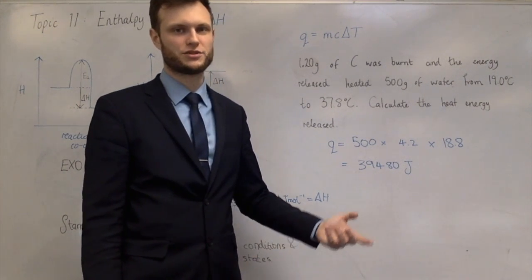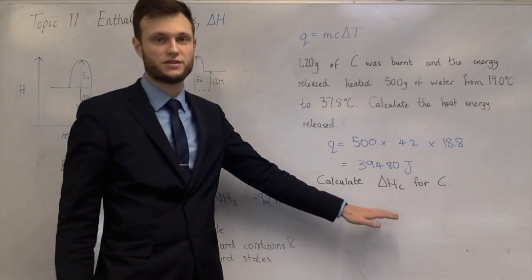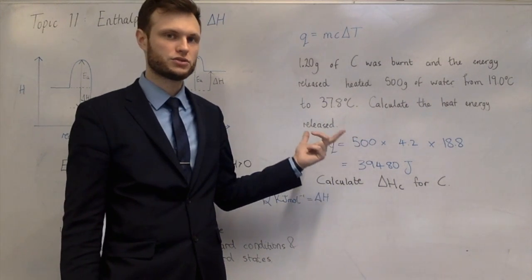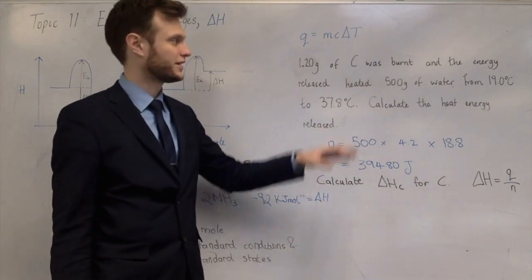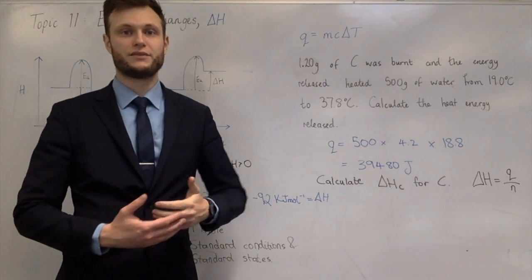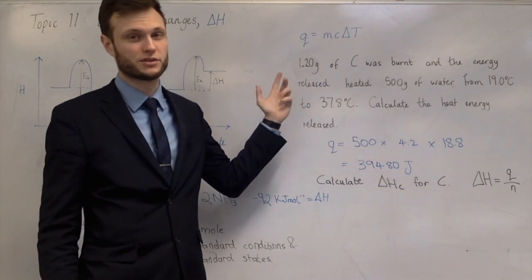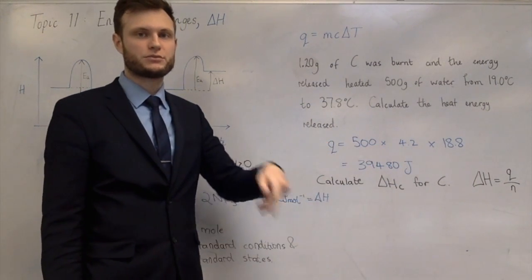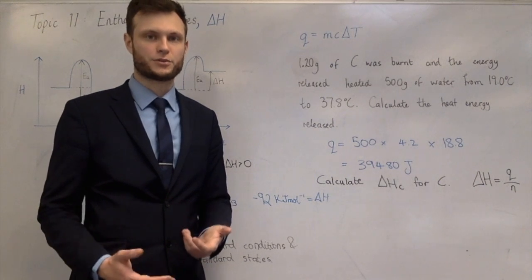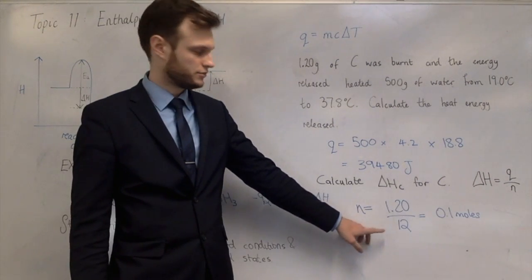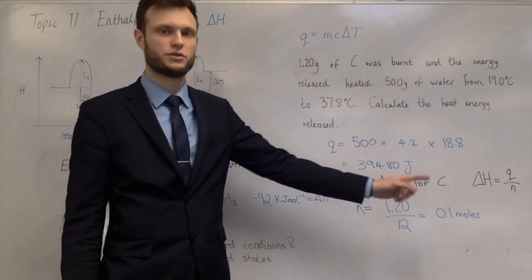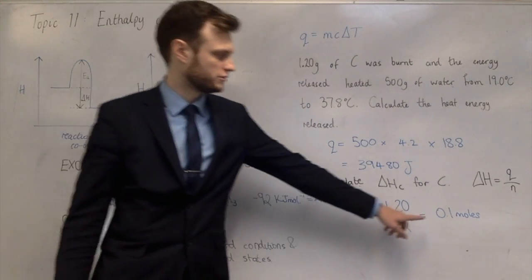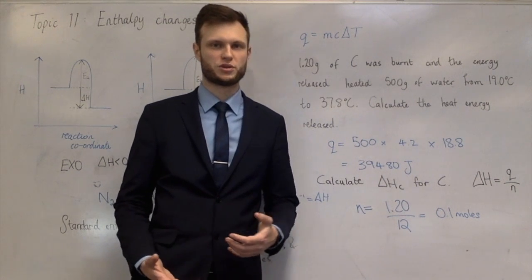The next part of the question asks you to calculate the enthalpy change of combustion for carbon. Enthalpy changes are in kilojoules per mole, so divide your energy change by the number of moles. You need the 1.2 grams of carbon here: divide by the molar mass of carbon (12) to get 0.1 moles. So the enthalpy change is the Q value divided by 0.1, then divided by 1000 to convert to kilojoules per mole.